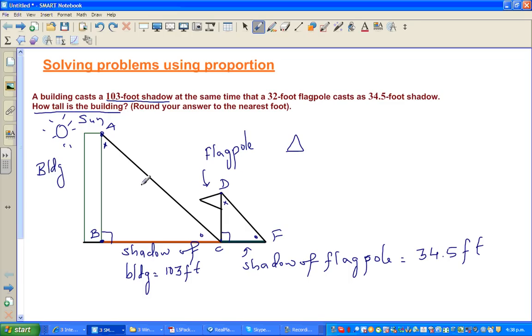Let me name this triangle ABC and this triangle DCF. I can say triangle ABC is similar to triangle DCF because the angles are equal or congruent.